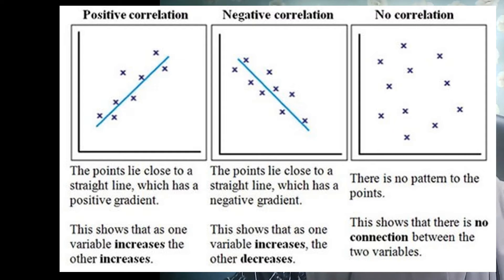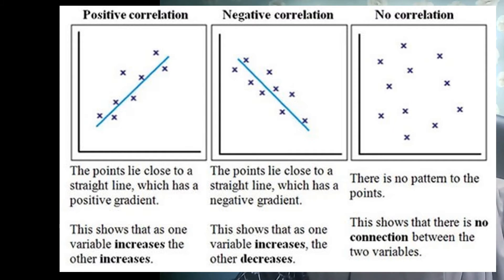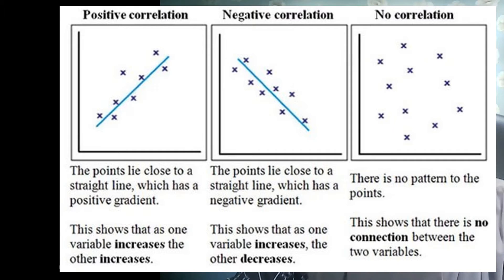You can see examples of positive, negative, and no correlation in this picture. In a positive correlation, starting from zero, as one variable increases, the other variable also increases. For a negative correlation, the points lie close to a straight line with a negative gradient — it starts from a high number and goes down, meaning one variable increases as the other decreases. For no correlation, the data is scattered and you cannot plot it as positive or negative because there is no connection between the two variables.